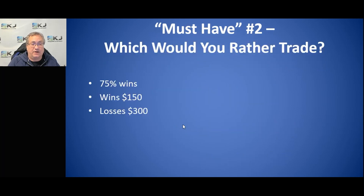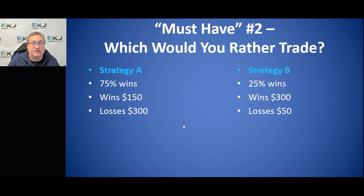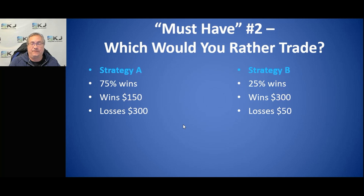Here's an example. Strategy A has 75% wins, $150 wins, and $300 losses. Strategy B has only 25% wins, but wins $300 and loses only $50. Both are net of slippage, commission, and all trading costs. Which one would you rather trade? Pause the video, do some calculations, and think about it.